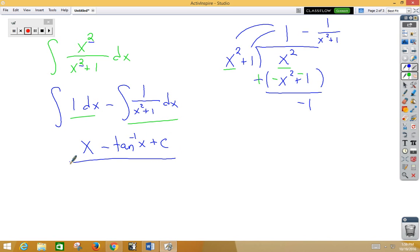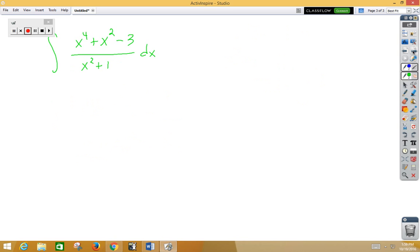Let's try one more. So in the third example, this time the numerator is higher than the denominator, so let's go ahead and long divide x squared plus 1 goes into x to the fourth plus x squared minus 3.